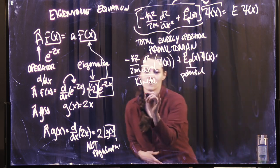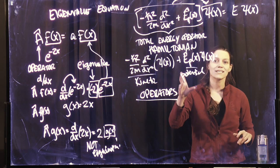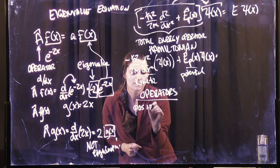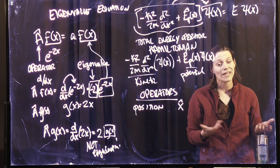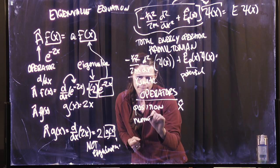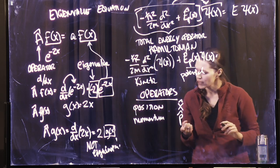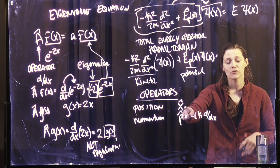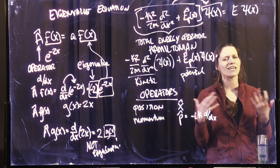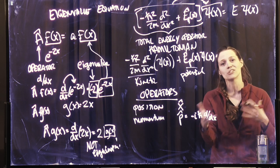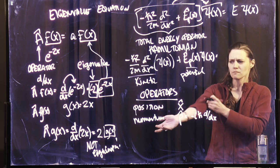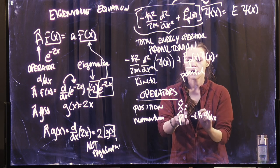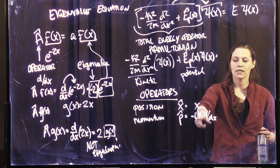We're going to go up to the wave function and ask it questions. The questions we're going to ask the wave function are: what's your position? And we're going to ask it with the position operator. Or we ask: wave function, what's your momentum? We're going to use the momentum operator, which is equal to minus i h-bar d/dx. It's actually kind of like an agent — you talk to the wave function in order to get information about the system. The position operator is just x. The momentum operator is minus i h-bar d/dx.